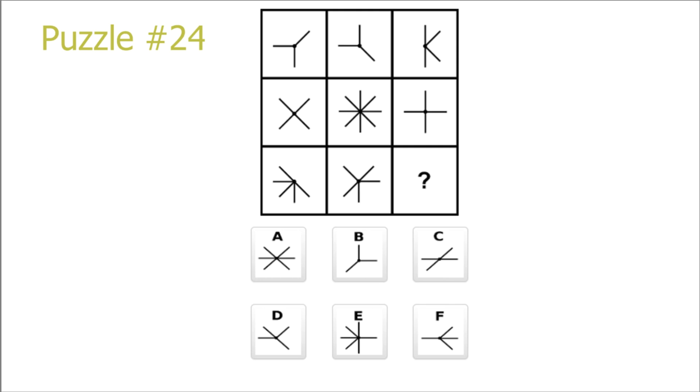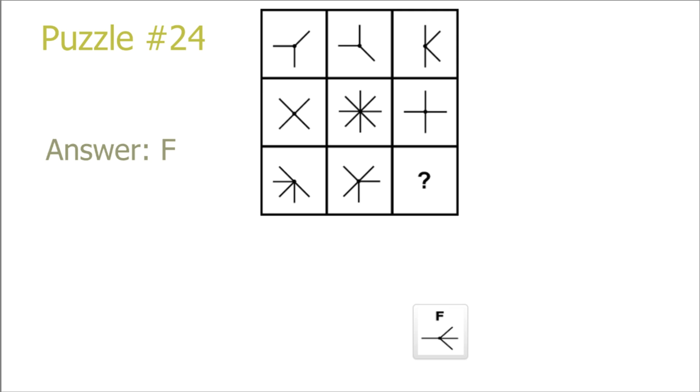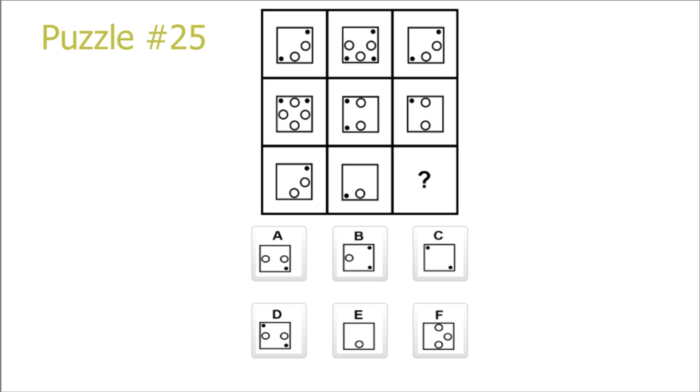Puzzle 24. Another addition and removing the overlapping line puzzle, and we get that the correct answer is F.